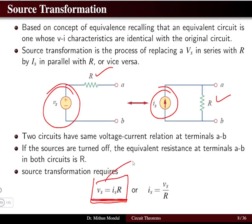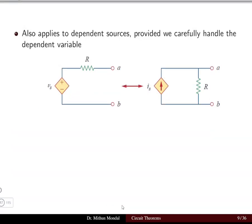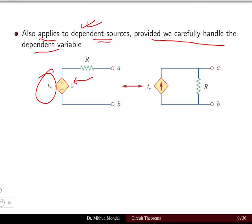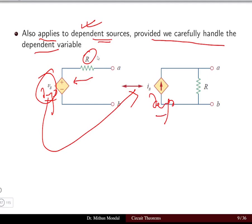The voltage source is converted to a current source by changing the resistance from series to parallel. Source transformation also applies to dependent sources, provided we carefully handle the dependent variables. A dependent voltage source with a series resistor can be converted to a dependent current source with a parallel resistor — the register changes from series to parallel while everything else remains the same.